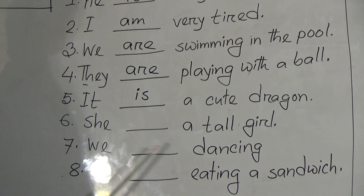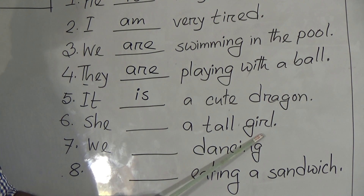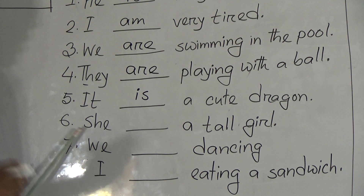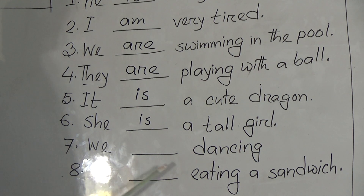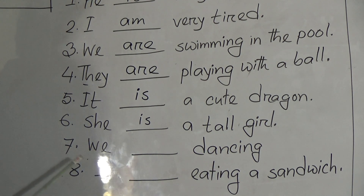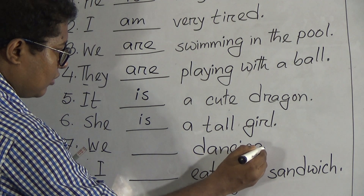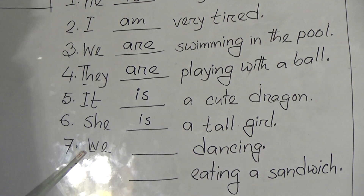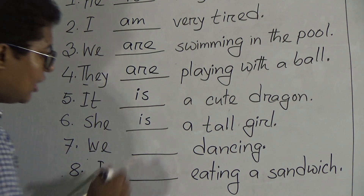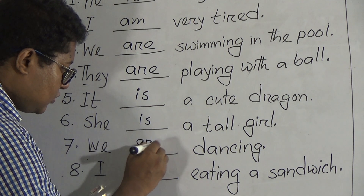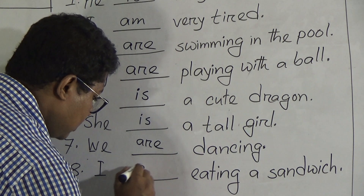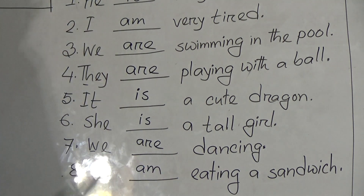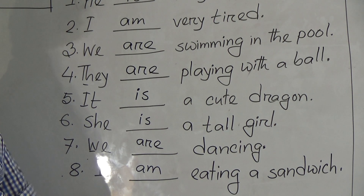Number 6: she dash a tall girl. So she is one, that's why we have to use 'is'. She is a tall girl. Number 7: we dash dancing. We means not one, many. That's why we have to use 'are' after we. We are dancing. Number 8: I dash eating a sandwich. So after I, we have to use 'am'. I am eating a sandwich.